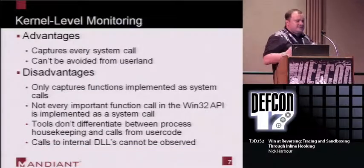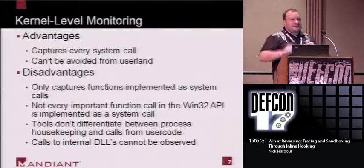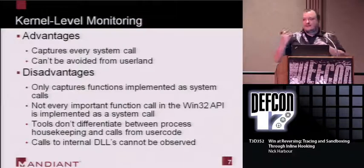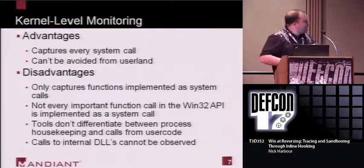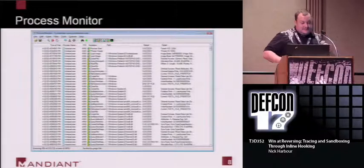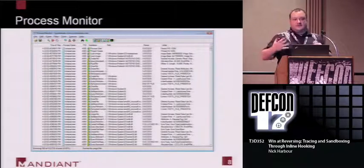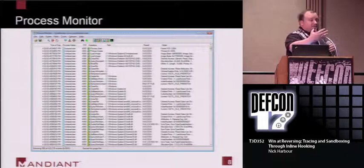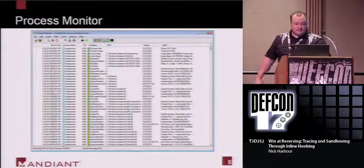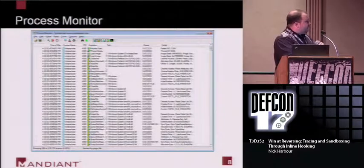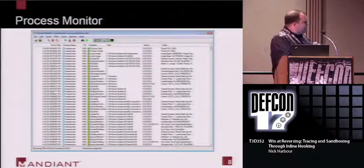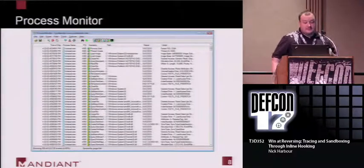Another disadvantage is you're going to see a lot of housekeeping stuff. Every time you launch a process — even a Hello World program — you can use Process Monitor and see thousands upon thousands of system calls. With skill you can filter that down, but you're still seeing a lot more data than you care about. Here's a screenshot of Process Monitor: I launched Notepad and have 132,000 events, of which it's currently showing 793 on screen, and really nothing important is happening at all. I think we can do a little better.